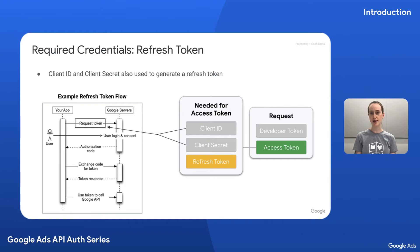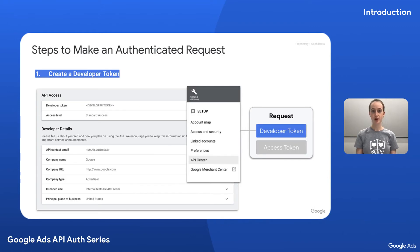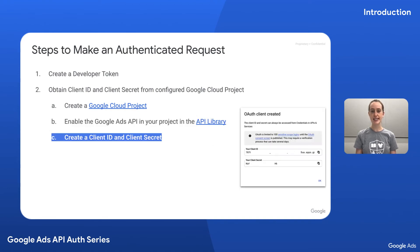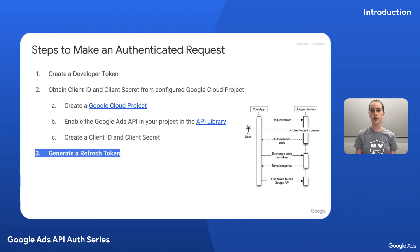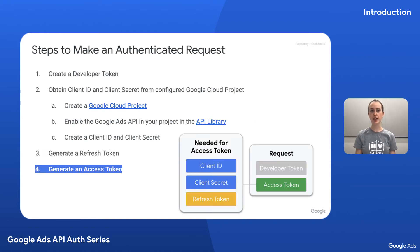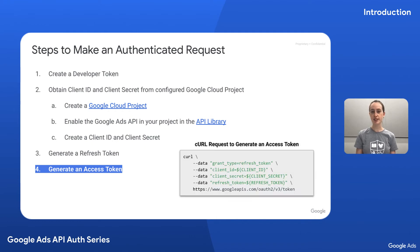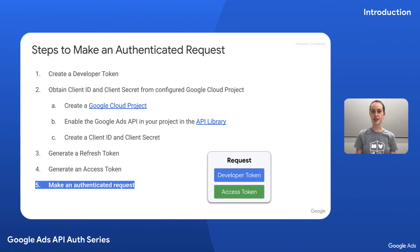We'll demonstrate how to complete this process in different ways in subsequent videos. Now let's recap that process from beginning to end. First, create a developer token in the API Center of a Google Ads Manager account. Next, create a Google Cloud project if you don't already have one. Then enable the Google Ads API in the API library. Create a client ID and client secret in the Google Cloud project. Use your newly created client ID and client secret to generate a refresh token following the flow we outlined. Now you're ready to generate an access token using your client ID, client secret, and refresh token — the client libraries would handle this piece for you. Here's a sample curl request to generate an access token. Finally, issue your API request using your developer token and access token.